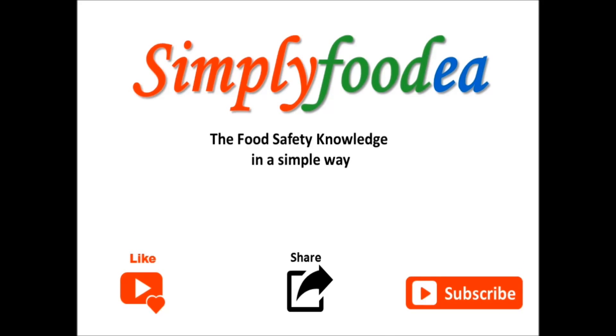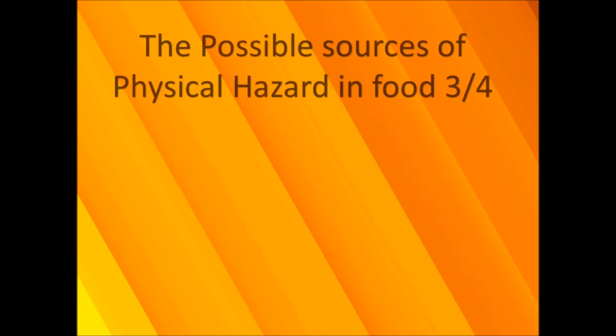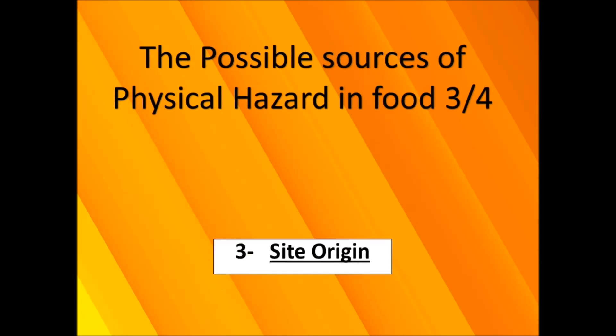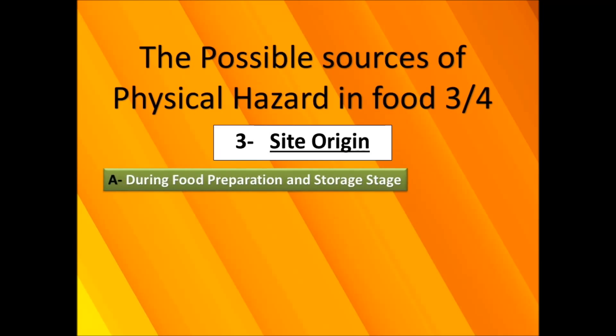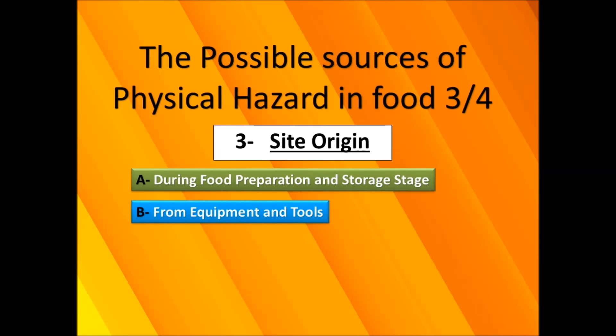Hello everybody again on Simply For the YouTube channel. Welcome back. Today we'll continue the possible sources of physical hazards in food, Parts 3 and 4, which is site origin. We have finished in the previous videos: number A, during food preparation and storage stage, and number B, from equipment and tools. Today we'll continue C and D.